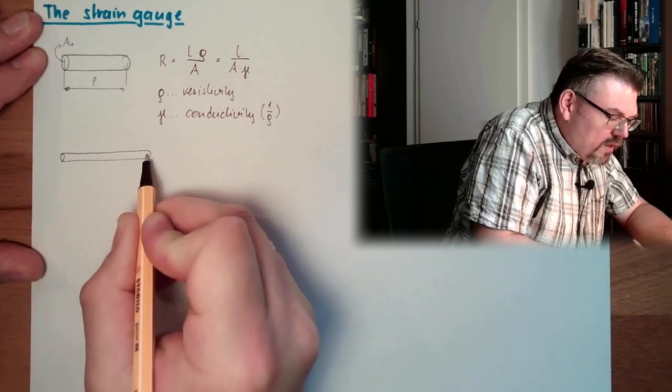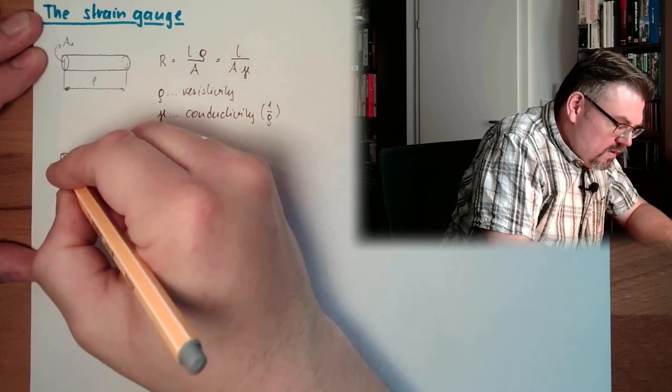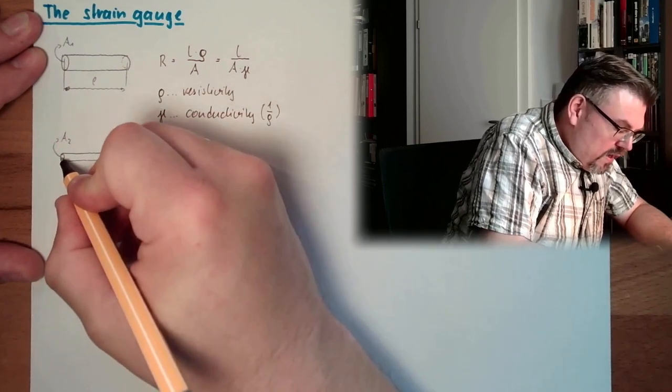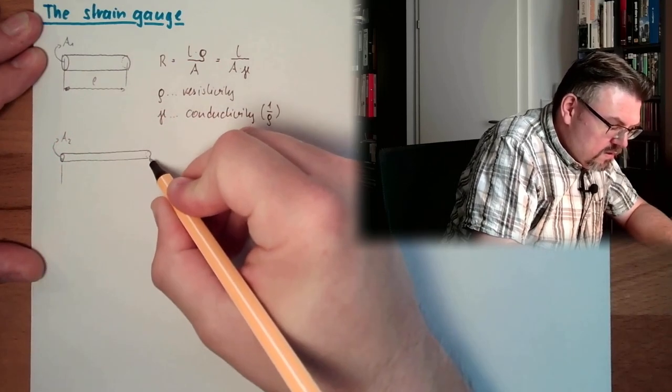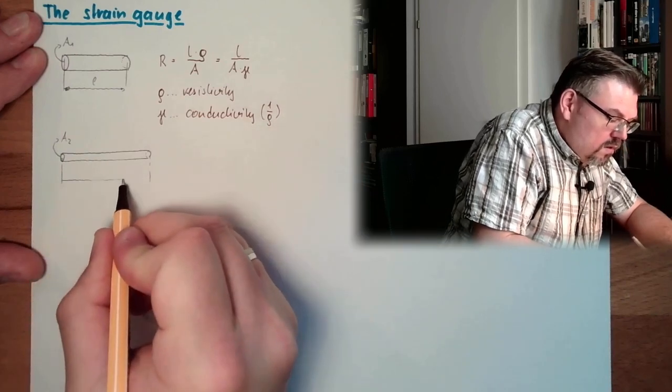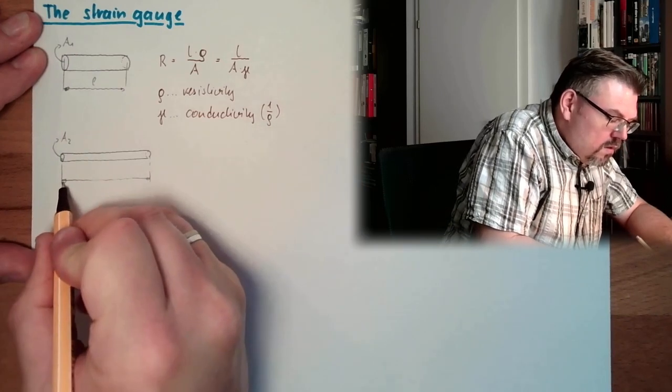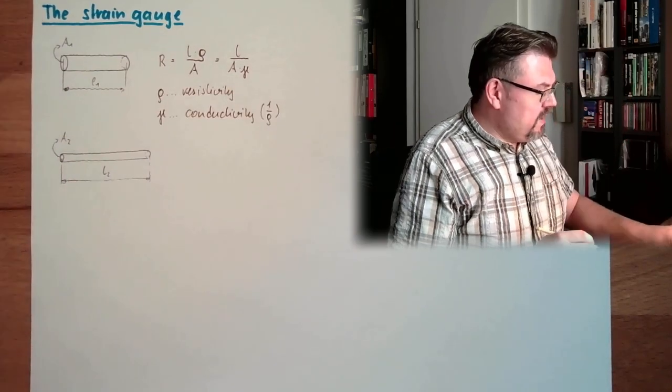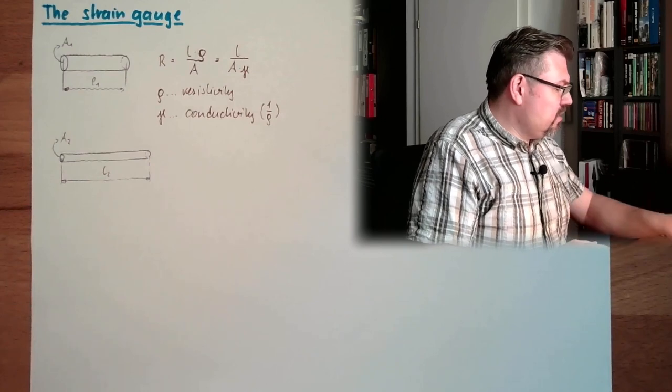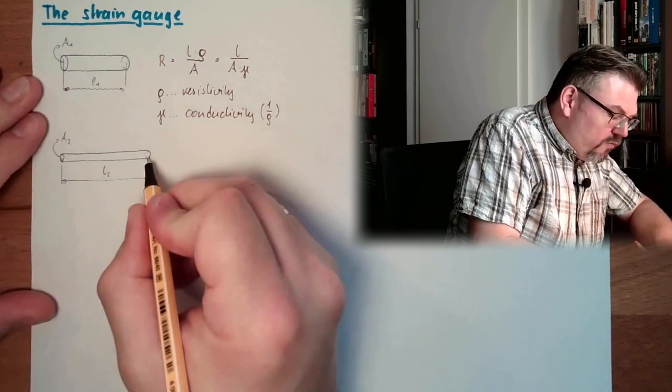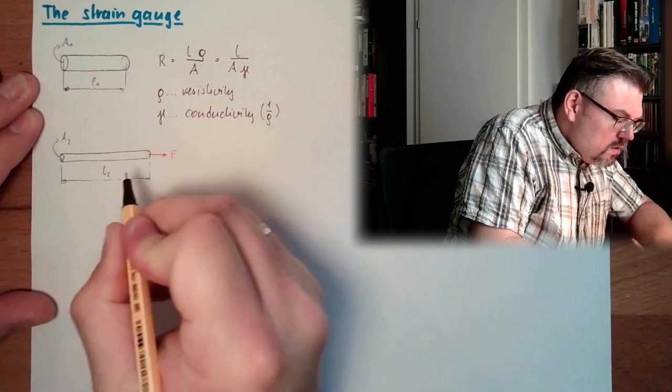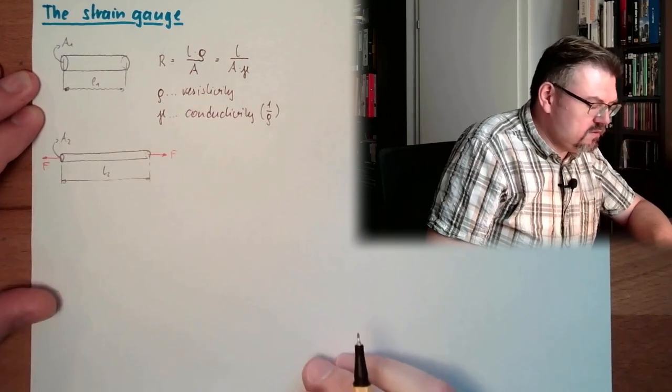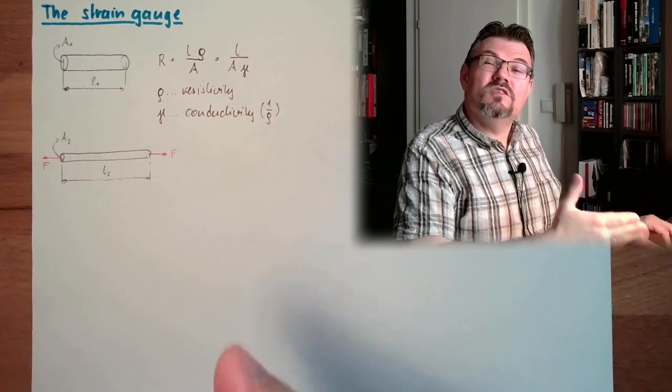This thing will get longer. I'm drawing it now extreme. So, here we have suddenly the area is smaller, A2. And the length, L2. This is just because we applied here force. And to keep it in balance, I apply here the same force.